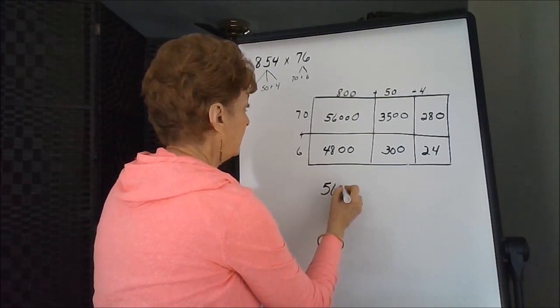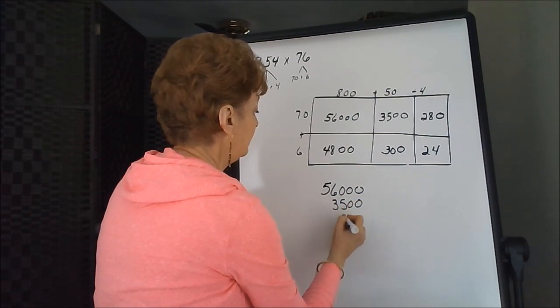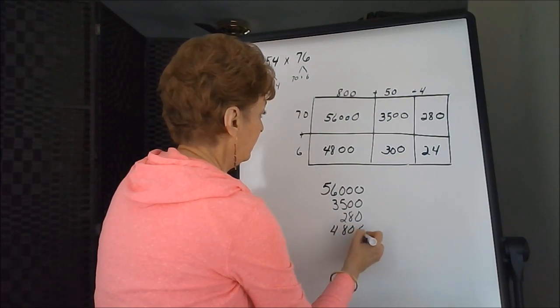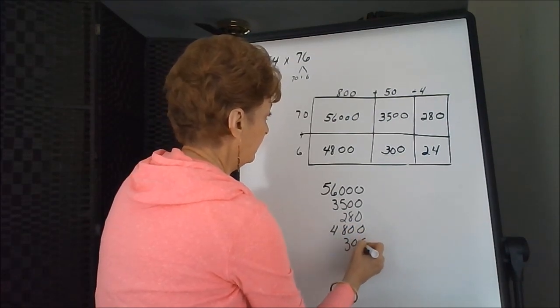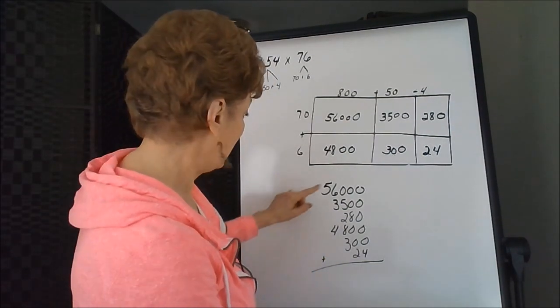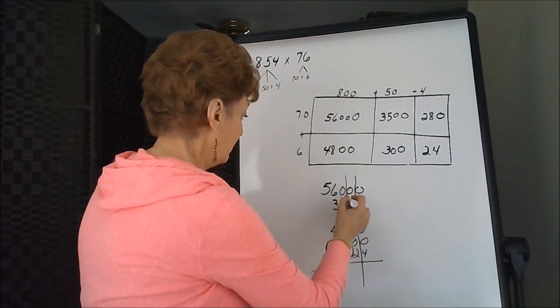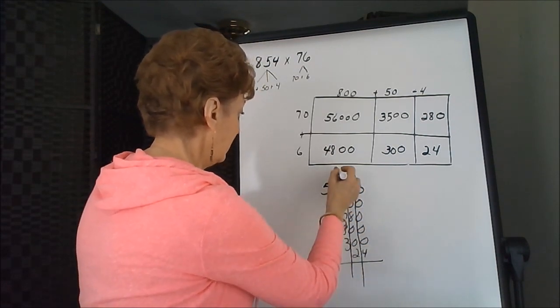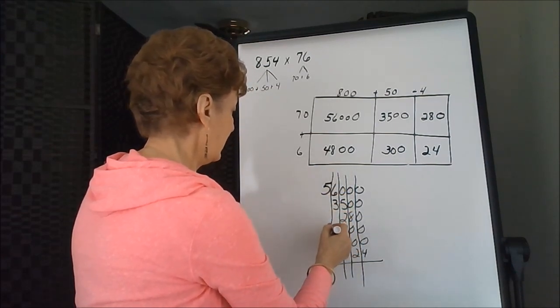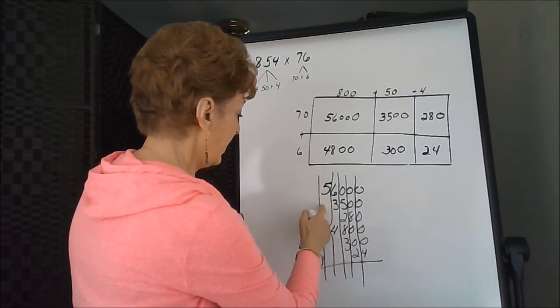Partial products, being careful that you line them all up. All of the ones column, I have a ones column here, my tens column is here, my hundreds column is there, the thousands column, I got a little sloppy there, didn't I, and the five, the ten thousands.